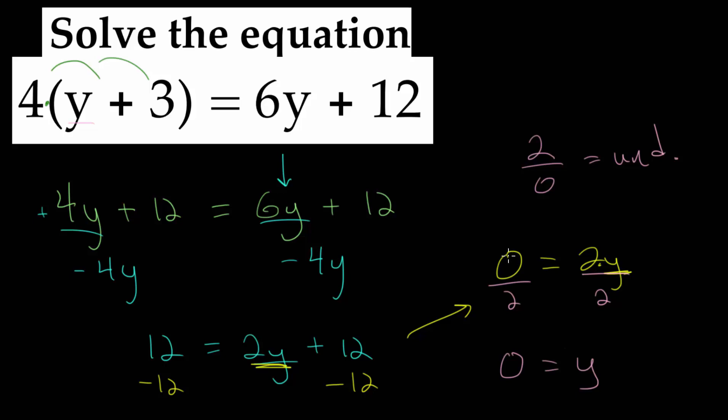You can imagine this as if you have, let's say, 0 chairs, and you're splitting them equally between two people. Each of those people would get 0 chairs. After all of that, we can conclude that y is equal to 0.